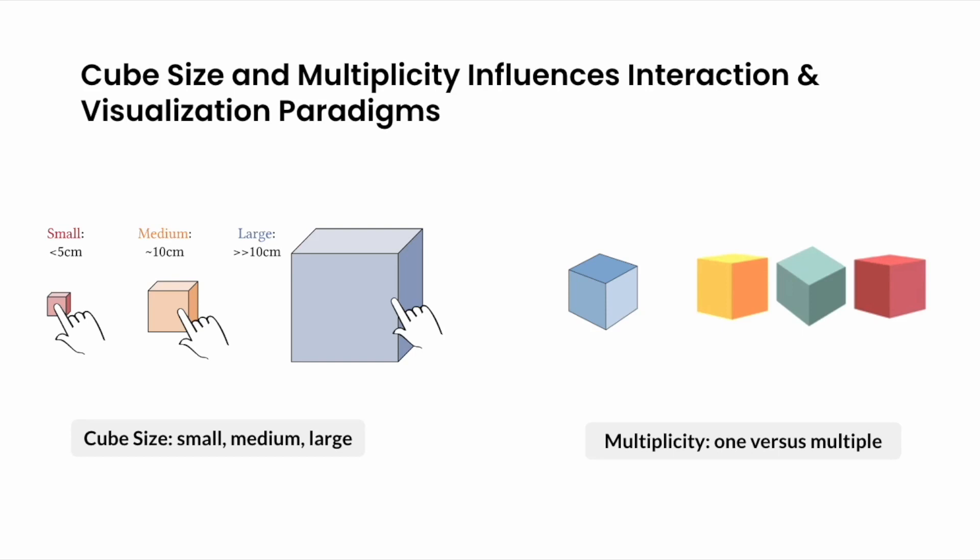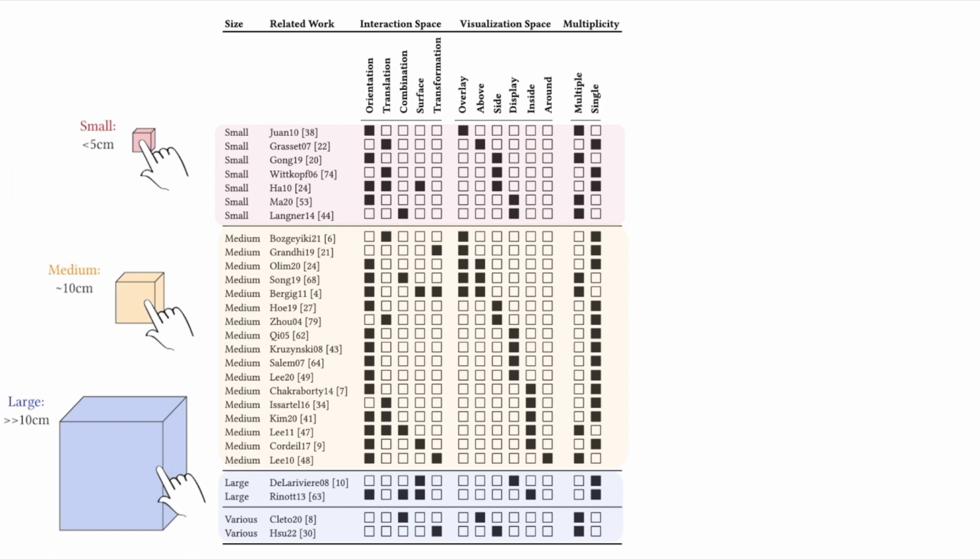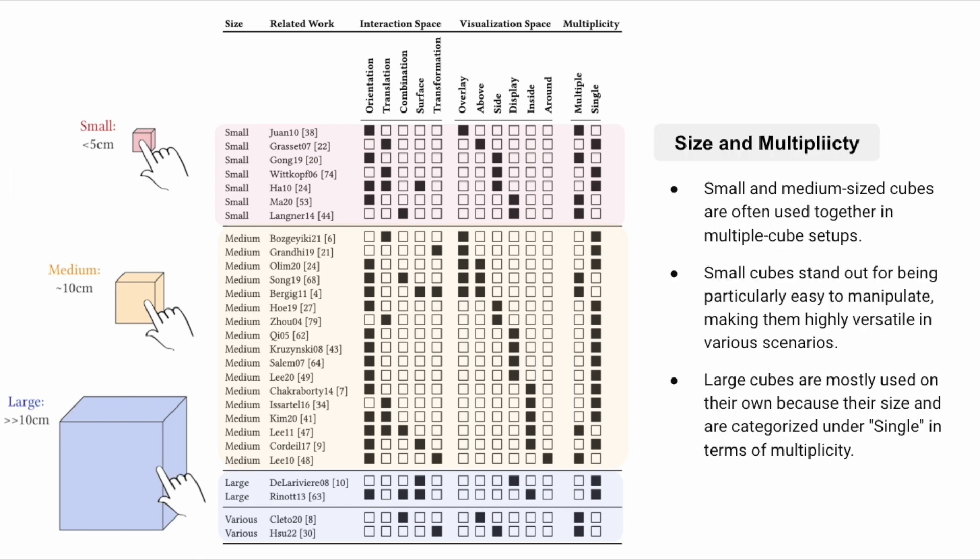Multiplicity refers to the quantity of tangible cubes, including either a single or multiple cubes. We discussed how the size and multiplicity of cubes affect our choices in interaction and visualization spaces and identified several design patterns. Small and medium-sized cubes can be used in multiplicity as they are relatively more portable. Large cubes, on the other hand, tend to be used in singularity because of size constraints.